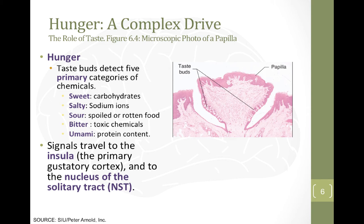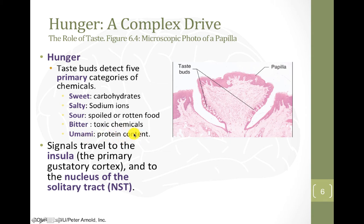To get into the topic of hunger, let's look at what happens in the basic process of eating. Eating starts with the mouth — the chewing and swallowing of food — and that involves the taste of food as well. The taste of food is an important factor in motivating how much we eat. Taste buds can detect five primary categories of chemicals: sweet, salty, sour, bitter, and umami. Sweets indicate carbohydrates, saltiness relates to sodium, sour is useful for detecting spoiled or rotten food, bitter is good at detecting toxic chemicals, and umami is that savory flavor associated with protein content.